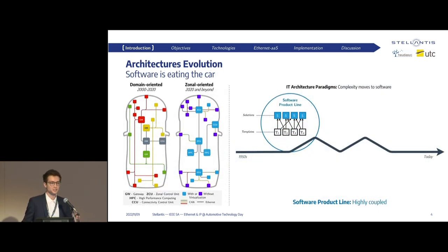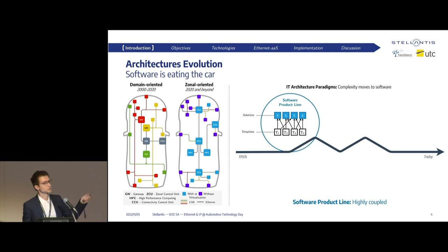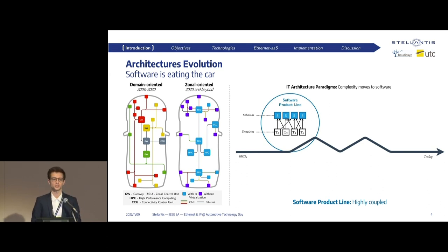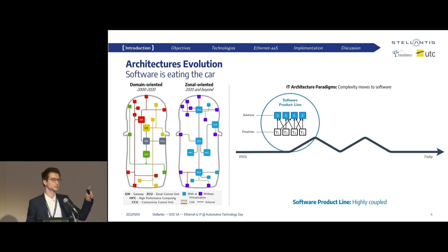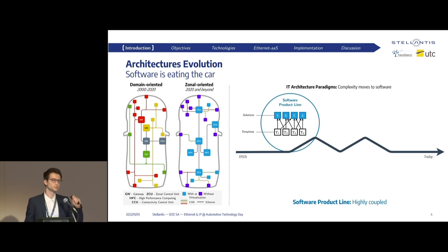There is a need for a change in architectures. There are two main transformations happening in automotive. The first one on the left is hardware — we're moving to a more zonal approach, which decreases cable length, costs, and weight. Ethernet is one of the main drivers of this, because it lets us share one cable for all network flows in the vehicle. However, we also notice that the complexity reduced from hardware is actually only moving to software.